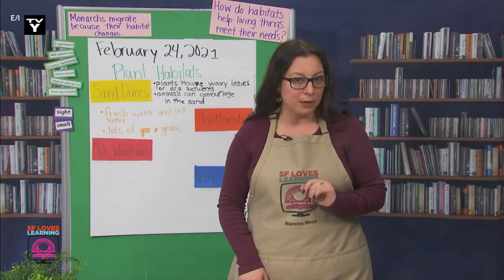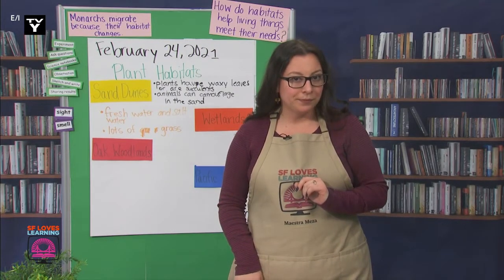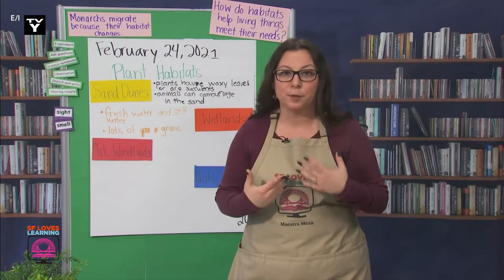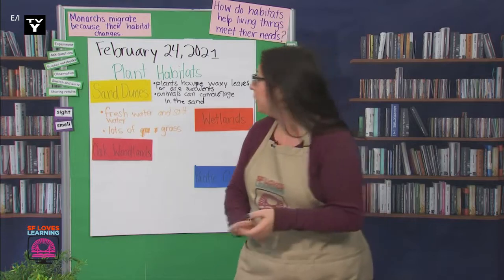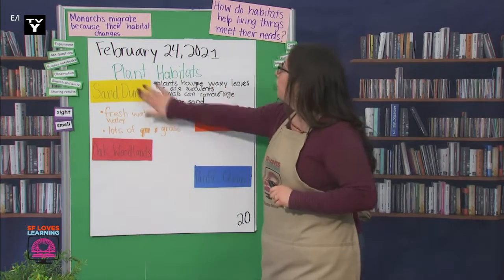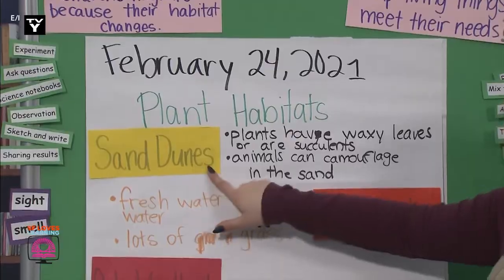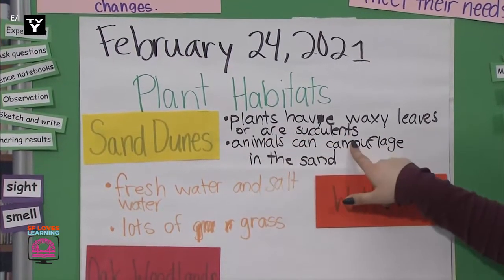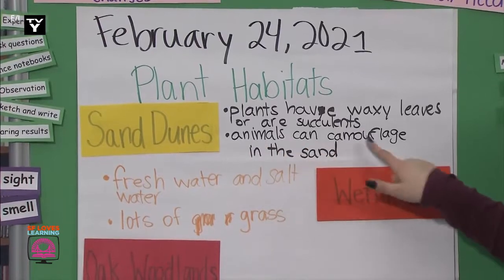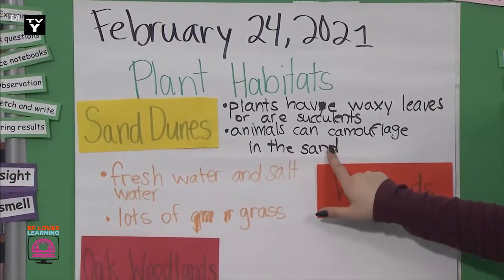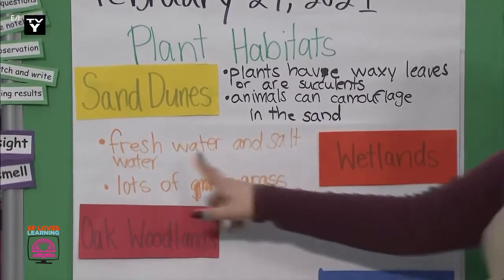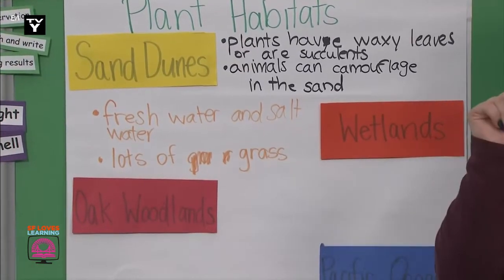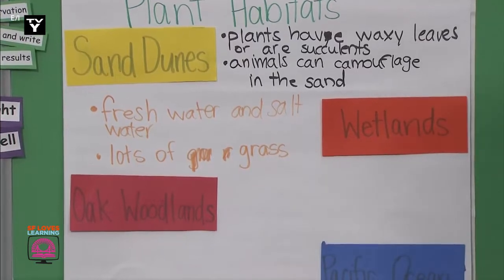Do you have your notebooks ready for note taking? Alright, take a moment to go get it. I'll re-read our notes from yesterday while you get your notebook. So we have plant habitats — sand dunes. Plants have waxy leaves or are succulents. Animals can camouflage in the sand. And then in the wetlands, they have fresh water and salt water and lots of grass. Now I remember. Muy bien!